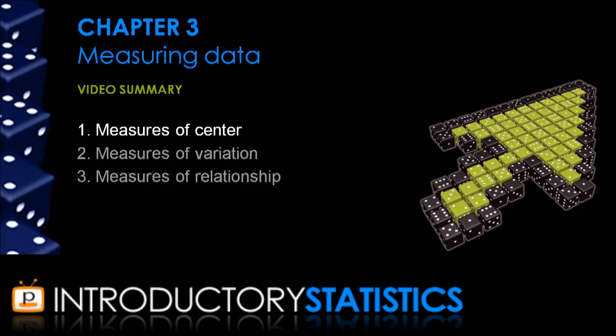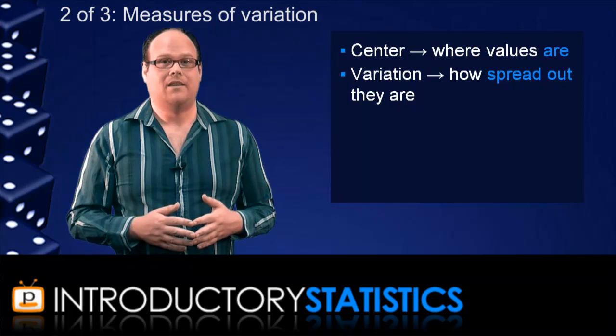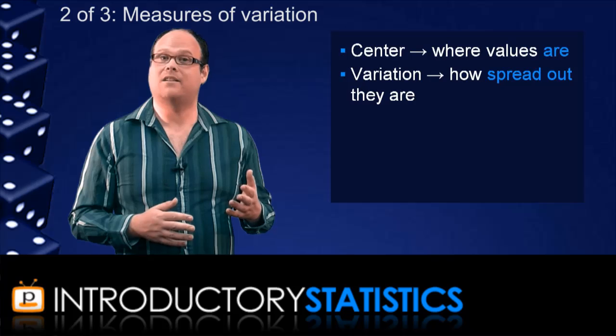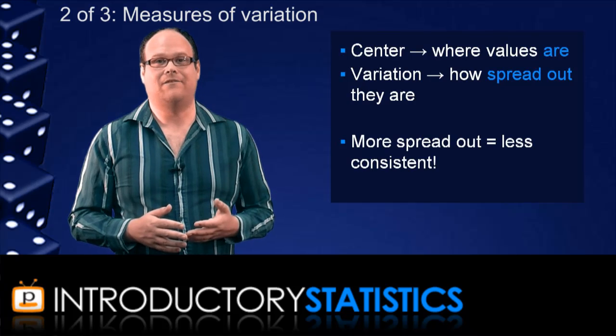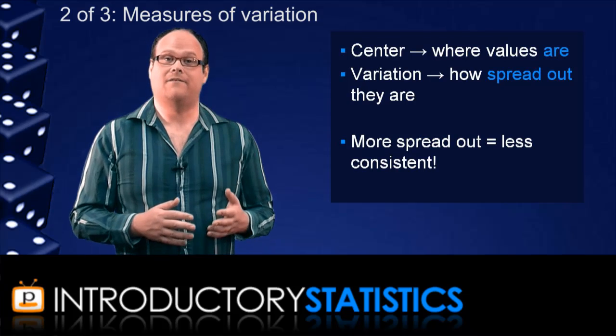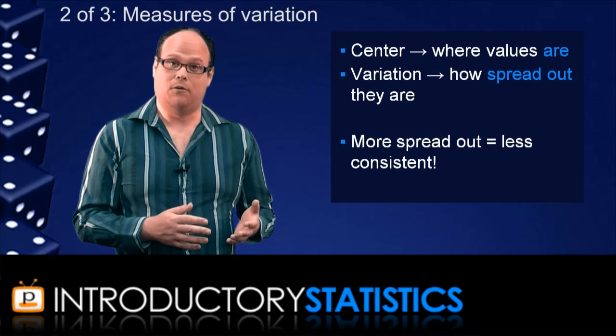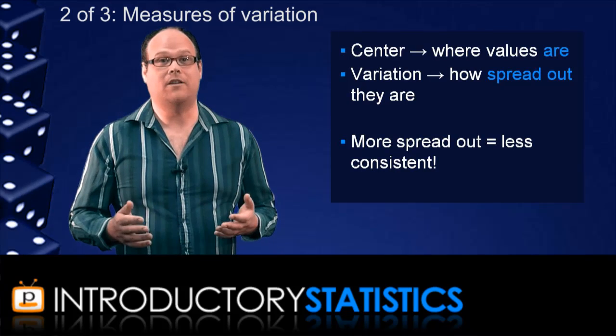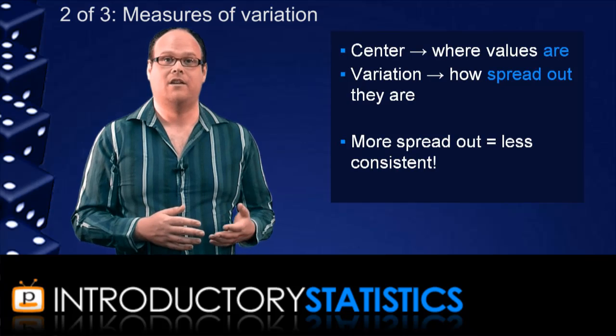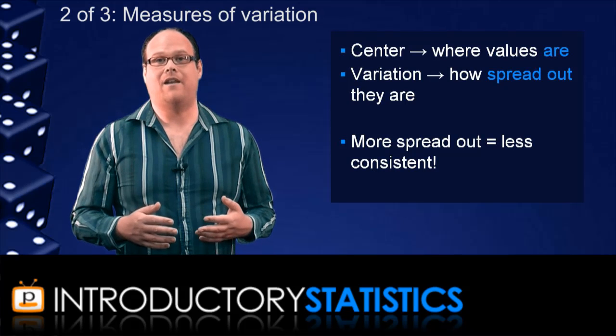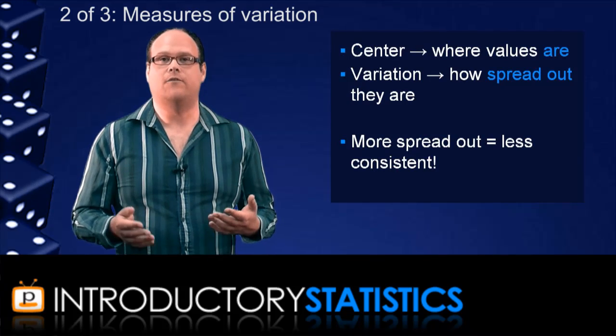Whereas measures of center tell you about where the data values are, measures of variation tell you about how spread out they are. This is particularly important because values that are spread out are less consistent than values that are not spread out. That is, values will vary more from sample to sample. And this is important because it means we can't be as confident in the data if there's more variation. So variation will tell you something about how much you can use your data to infer things.